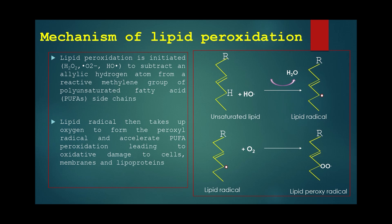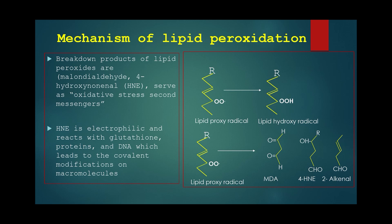This lipid radical, in the presence of oxygen, is converted into a lipid peroxy radical, which accelerates PUFA peroxidation, leading to oxidative damage to the cell membrane and lipoproteins. Further breakdown products of lipid peroxides are malondialdehyde (MDA) and 4-hydroxynonenal (4-HNE), which serve as oxidative stress second messengers and act as biomarkers indicating oxidative stress in the system.